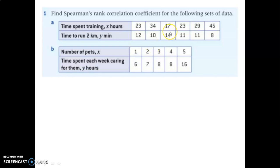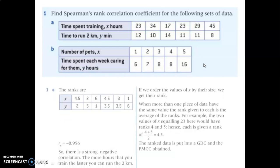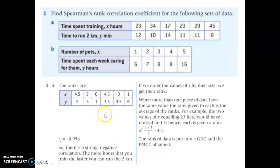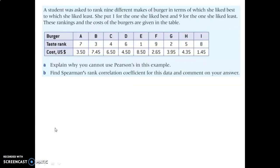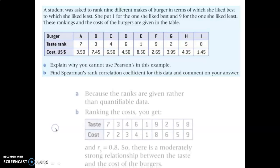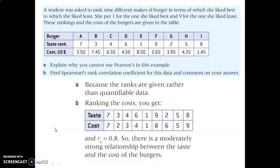Here are a couple more for you to try. Try problem A: rank those values and find the r-value. An important thing to note is that we have two values that are the same — like 23 and 23 — and therefore we call them both 4.5 and 4.5. Check what it says here very carefully. Now try problem B and check your work, and then here's one more — check your work here as well.